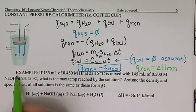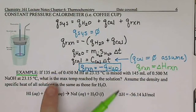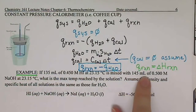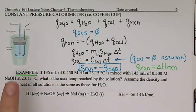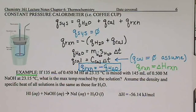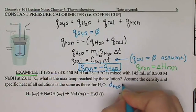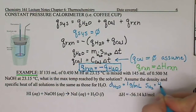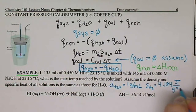Let's work through an example. We're told that 135 milliliters of 0.450 molar hydrogen iodide at 23.15 degrees Celsius is mixed with 145 milliliters of 0.500 molar sodium hydroxide at the same temperature. We want to find the maximum temperature reached by the solution, and we assume the density and specific heat of all solutions are the same as water: density = 1 g/mL and specific heat = 4.184 J/g·°C.